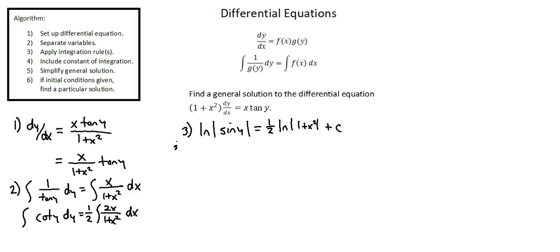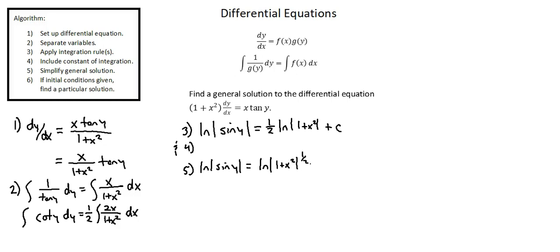This covers steps 3 and 4. Step 5: simplification. No change on the left side — natural log of the absolute value of sine y. On the right side, we move the coefficient of 1 half to the exponent of the argument of the natural log term, giving the natural log of the absolute value of 1 plus x squared to the power of 1 half. Now we're going to change the plus c.